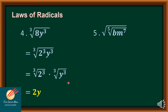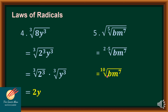Number five: the square root of the fifth root of bm to the seventh power. The outer index is 2, so I multiply 2 times 5. The radicand is bm raised to the 7th power. Since 2 times 5 equals 10, we have the 10th root of bm to the seventh power.